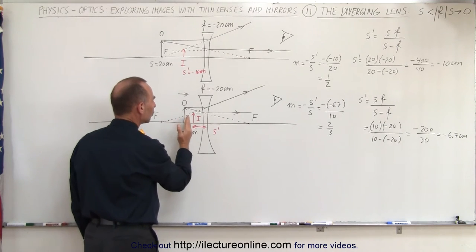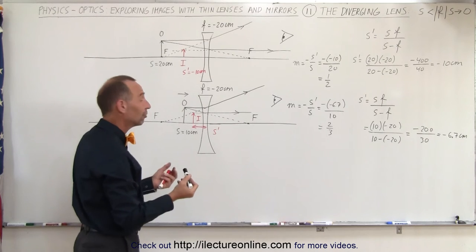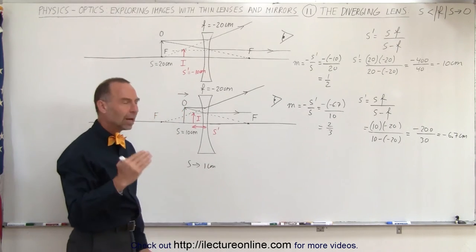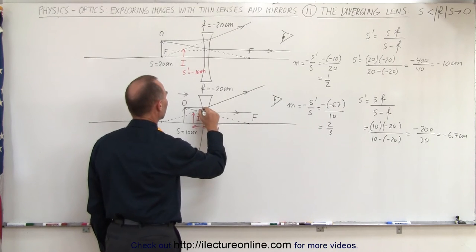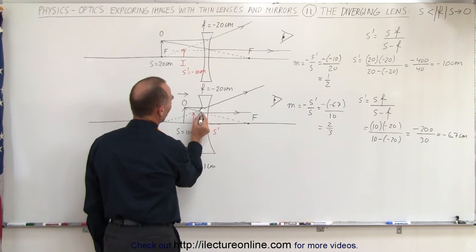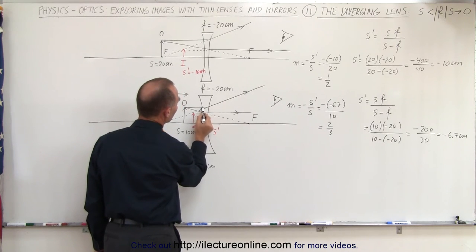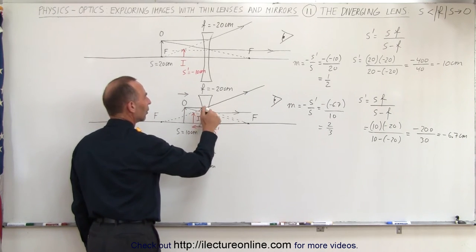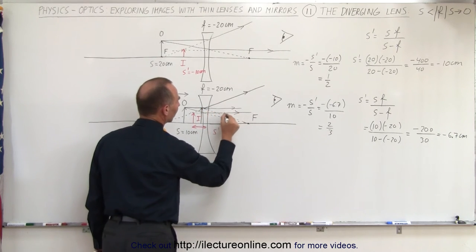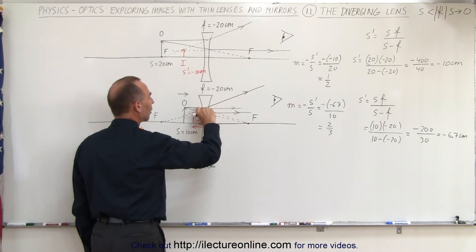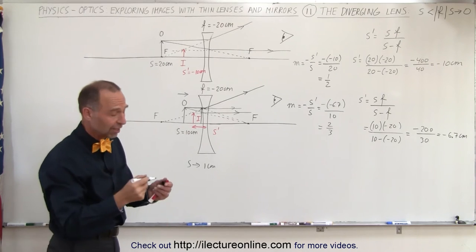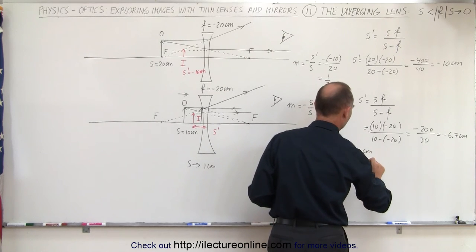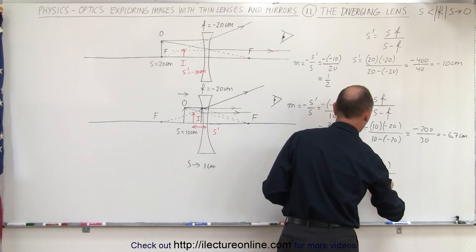What's going to happen as we bring the object closer and closer to the lens? In the limit, let's say S shrinks down to just one centimeter, so we're placing the object really close to the lens. Notice that where you draw the line from here to the focal point will be just across the lens, just below the height of the object. Then the ray will go out horizontally, which means the image will form right in front of the lens and will be almost the exact same size as the object. Let's verify: S equals 1 centimeter, so S prime equals 1 times minus 20 divided by 1 minus minus 20.